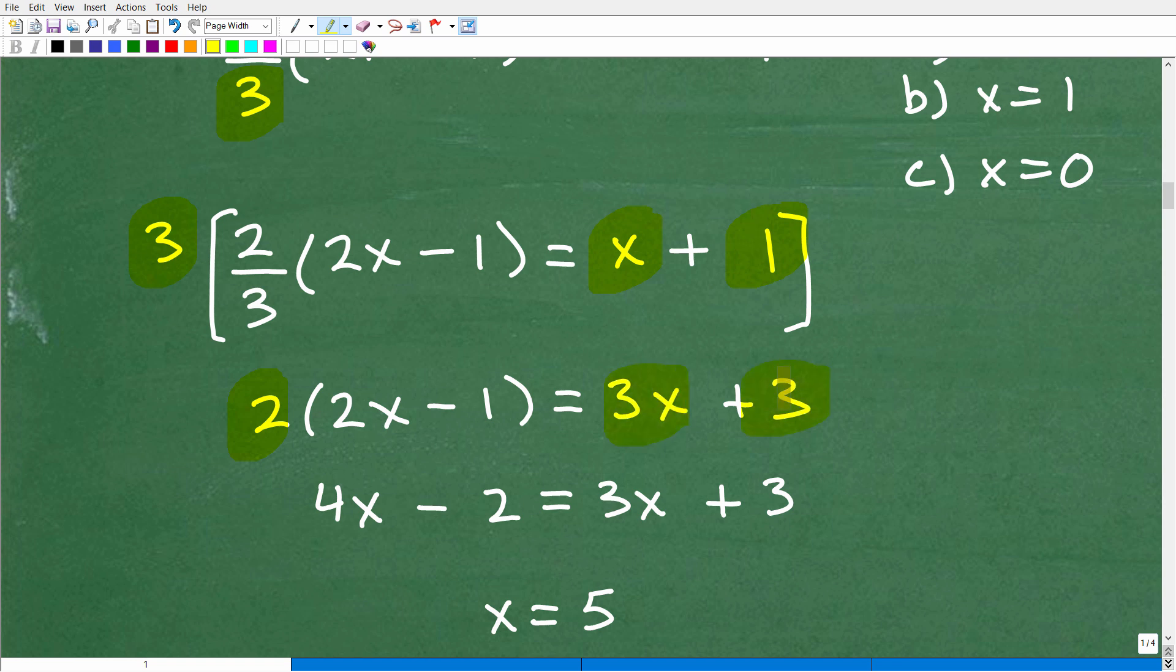Now, if you don't understand what I'm doing, you want to review how to work with multi-step equations. I have tons of videos in my pre-algebra and algebra playlist on my YouTube channel. But here's the work. So I have 2 times 2x minus 1. That's going to be 4x minus 2. And then I have 3x plus 3 on this side. I move this 3x over here. I get x. I move this 2 over here. I get 5. So x is equal to 5. So you can review this work if you want.